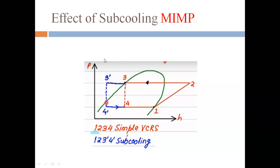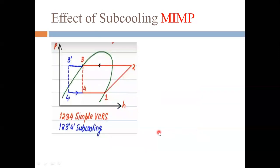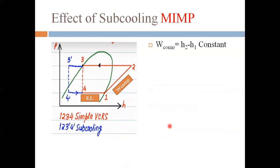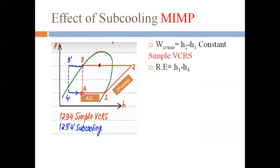The new cycle with sub-cooling is one, two, three-dash, four-dash. We need to understand whether COP is increasing, decreasing, or remaining constant. The refrigerating effect region and the compression work W are already identified. By doing sub-cooling, we are not changing any pressure, so the compression work W = h2 − h1 remains constant. In the simple VCRS, the refrigerating effect is h1 − h4.